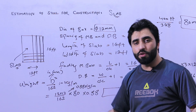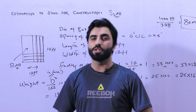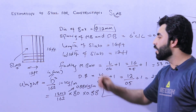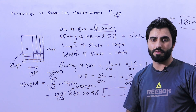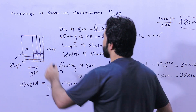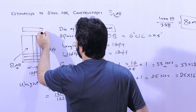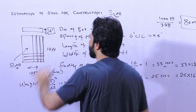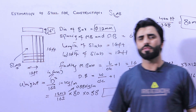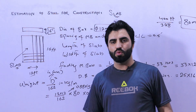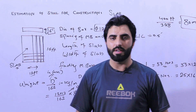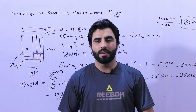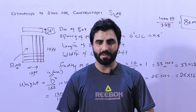You can use this D squared divided by 162 formula for any bar diameter — whether it is 16mm, 10mm, 8mm, or 6mm. Remember, for a normal RCC slab for a residential building, the depth should not be less than 6 inches. This is very important. Most students ask about this — if the depth is less, you will face more problems such as seepage. Thanks for watching, see you in the next video, goodbye.